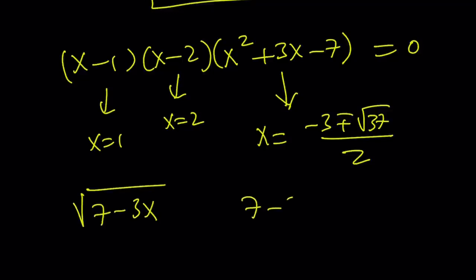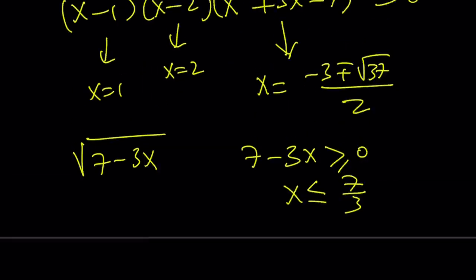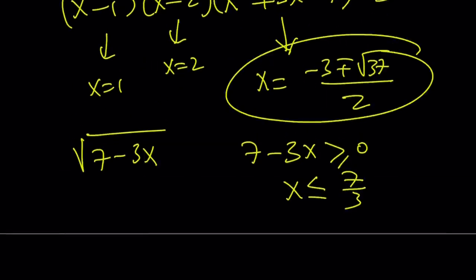The radical tells us that this radicand needs to be greater or equal to 0, which means x is less than or equal to 7 thirds. So if you check our solutions, 1 and 2 are good, but if you look at this, you're going to notice that one of them is not going to be less than or equal to 7 thirds. You can definitely check that for yourself, but I'm going to show you a graph at the end, so let's save it for that part.